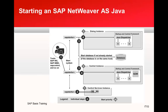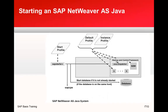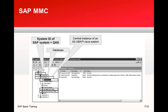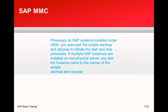The next slide shows how sapstartsrv starts the rest of the process: sapcp is started, then the database is checked and started if not already running, then the default and instance profiles are applied. Here you can also see the SAP MMC figure showing the system ID, database, and central instance of an AS ABAP-plus-Java system.